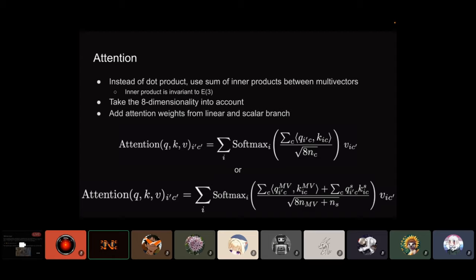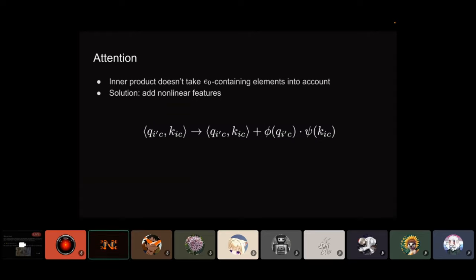When there is a scalar branch, they compute regular attention over the scalar branch and add that to the attention map. Because the inner product ignores all elements with E0, it cannot account for translations, so the attention map cannot depend on distances. Geometric algebra transformers solve this by adding non-linear features that act as an additional attention map, which can take distance into account.